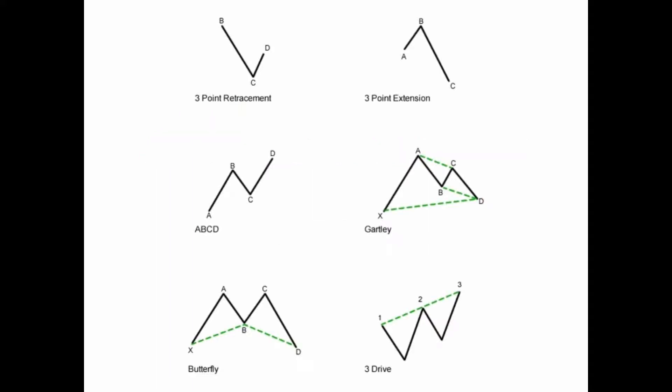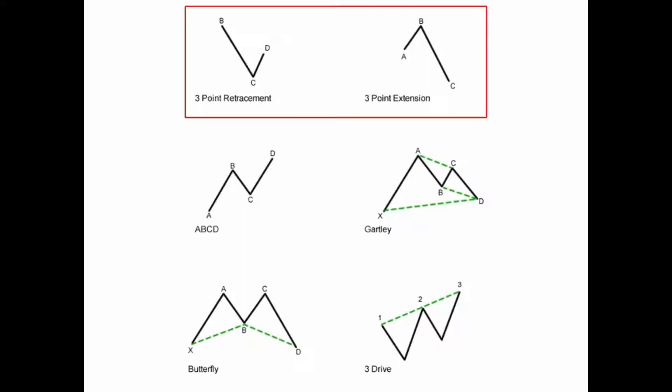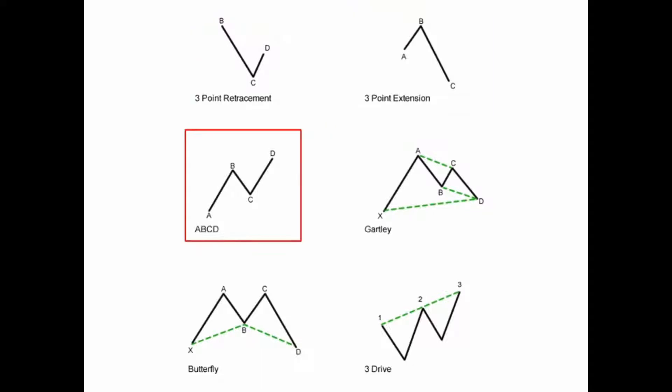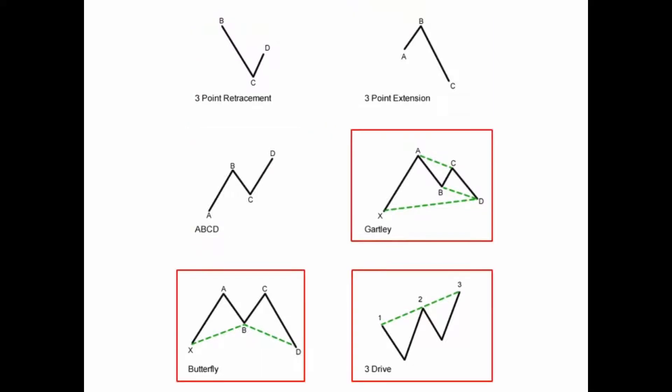There are three main groups of Fibonacci patterns. We have three-point patterns like retracements and extensions, four-point patterns like the ABCDs, and five-point patterns like Gartleys, Butterflies, and Three Drives.